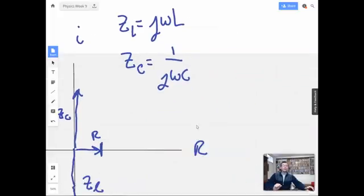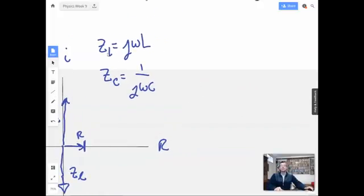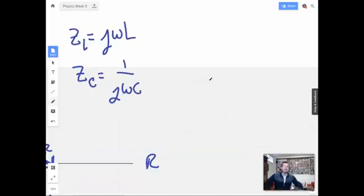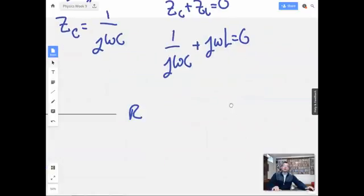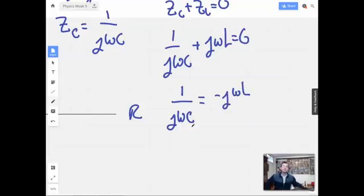So what we want here is we want the reactive impedance to cancel out. We want to have just the right amount of L to cancel out the C. So what we want is ZC plus ZL equals zero. So this is saying that we have one over J omega C plus J omega L equals zero. So we have one over J omega C equals negative J omega L. Okay, that seems reasonable.